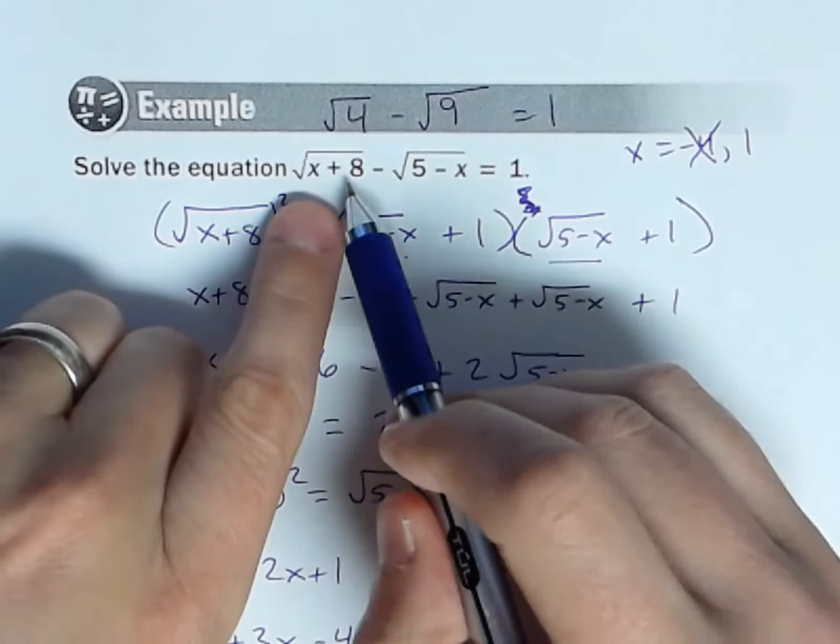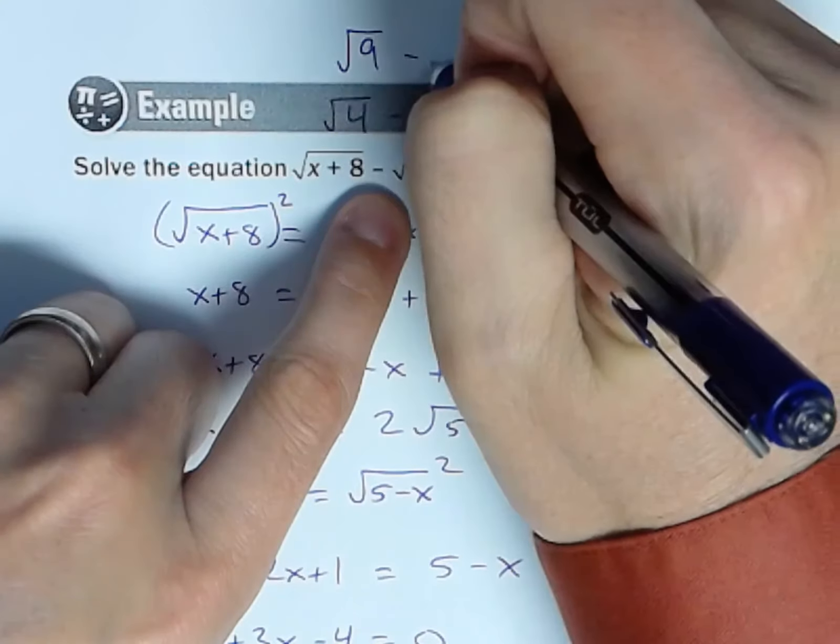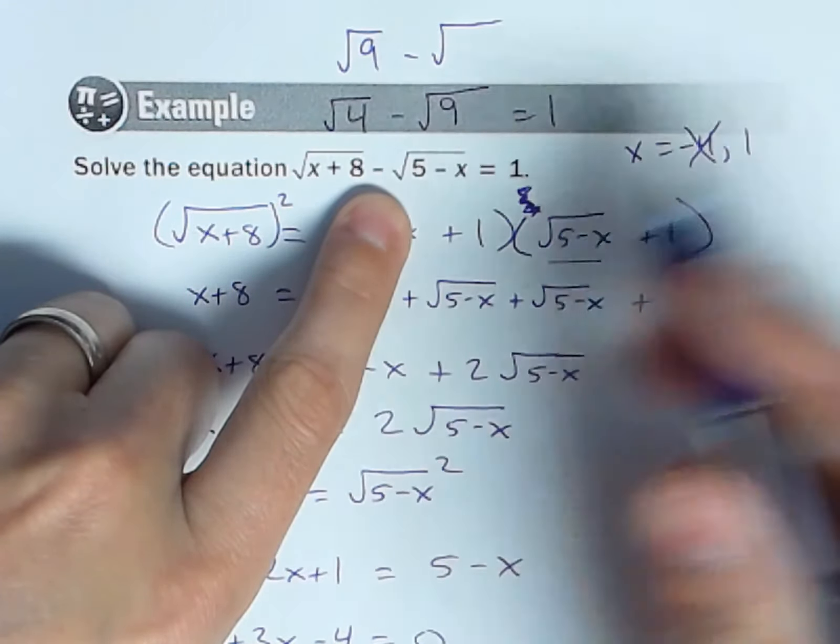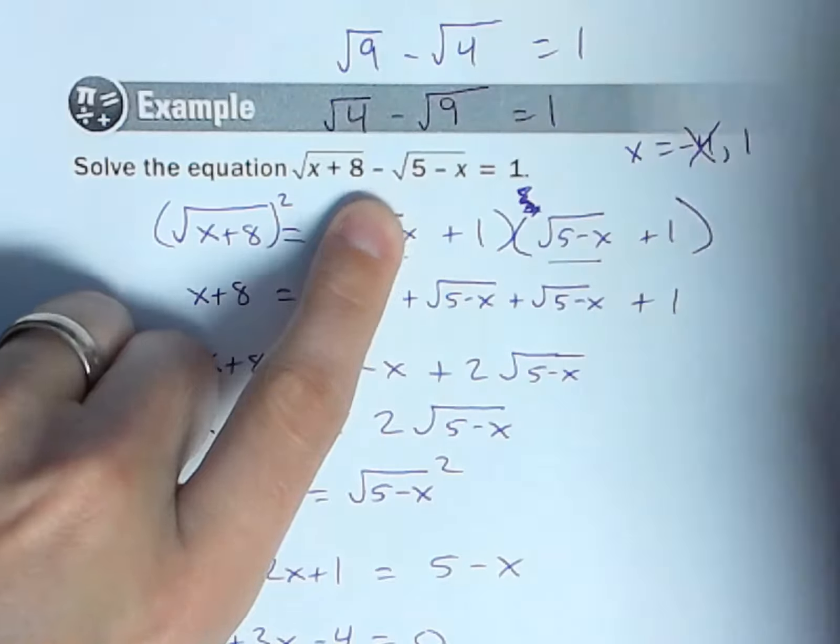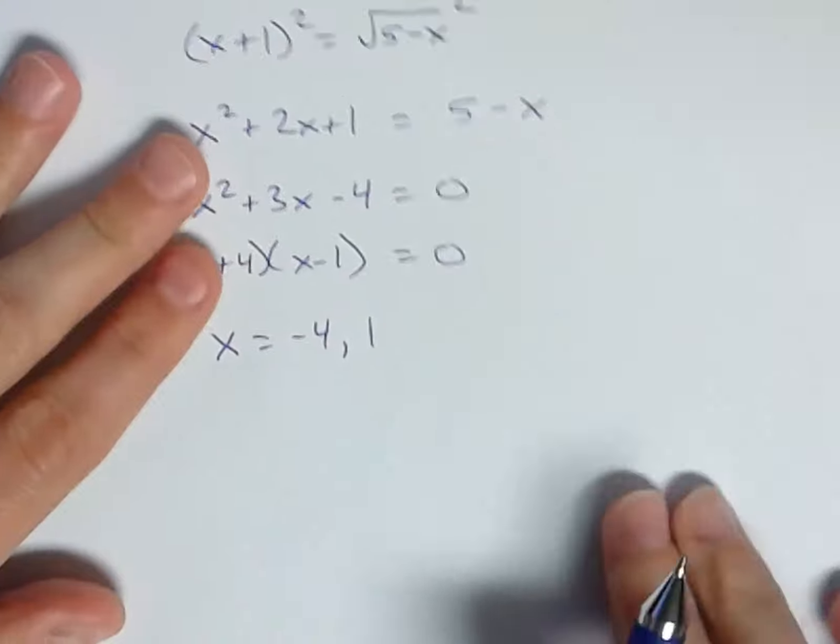So if I plug 1 in, I would get square root of 9 minus square root of 4 equals 1. Hey, that is going to work. 3 minus 2. And so, whew, after all of that, x equals 1 is our valid solution.